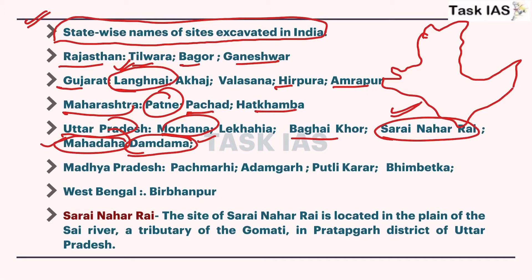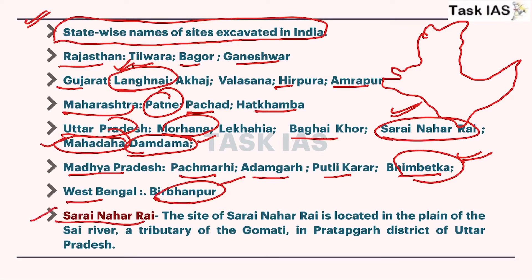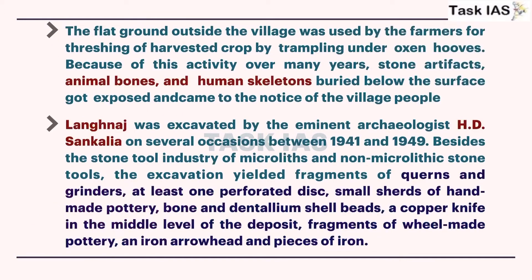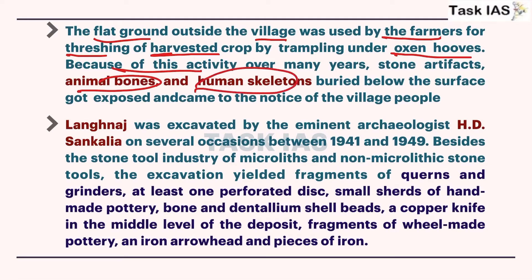Now some sites we will discuss in detail. Sarai Neher Rai is present in a tributary of the Gonti in Pratapgarh district of Uttar Pradesh. The flat ground outside the village was used by farmers for threshing of harvested crop under oxen, and because of this activity, animal bones and human skeletons were excavated - people involved in their regular activities fortunately discovered animal bones and human skeletons buried long years back.